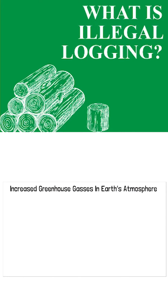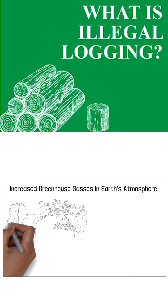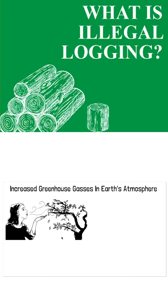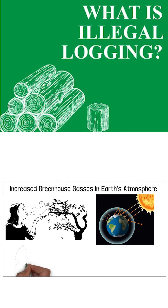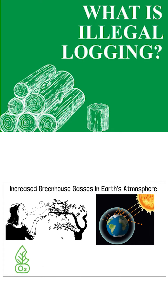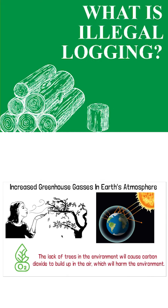Increased greenhouse gases in Earth's atmosphere is one major problem caused by illegal logging. Trees clean the air we breathe by taking in carbon dioxide, one of the gases that cause climate change. Once the carbon dioxide is absorbed, it is broken down into oxygen, which can then be used to breathe. The lack of trees in the environment will cause carbon dioxide to build up in the air, which will harm the environment.